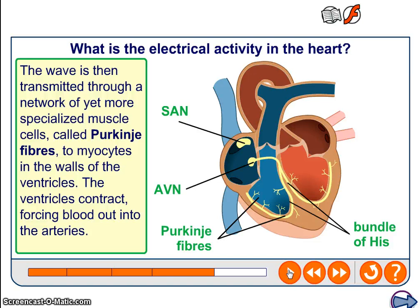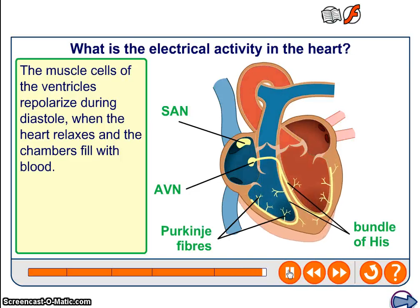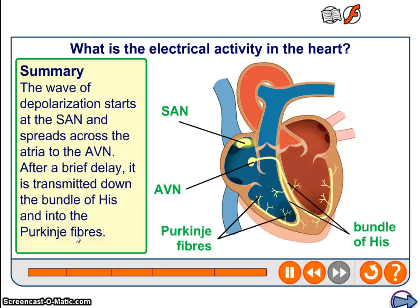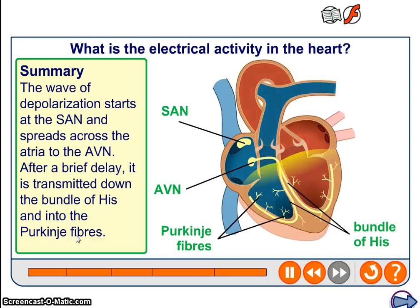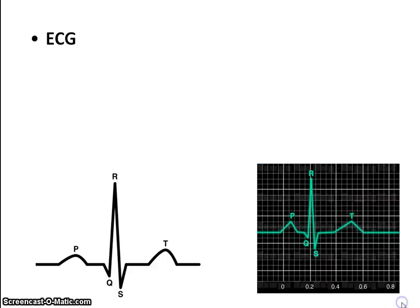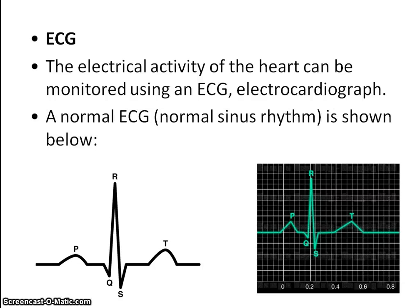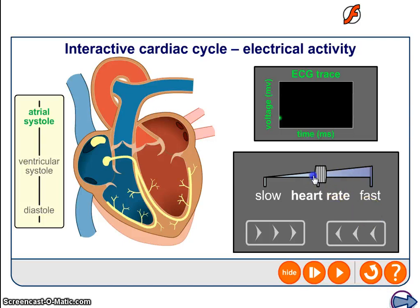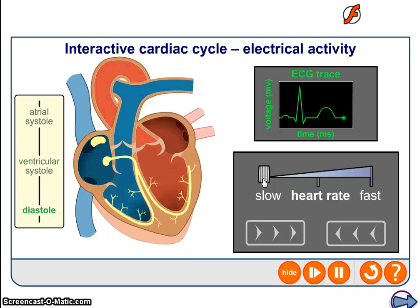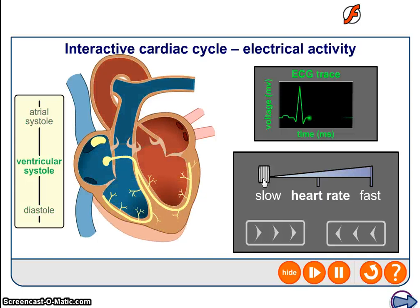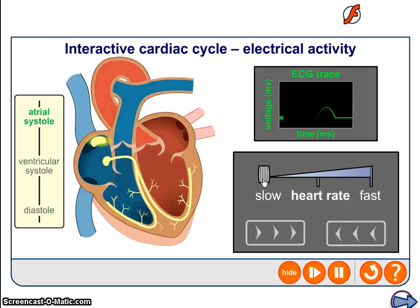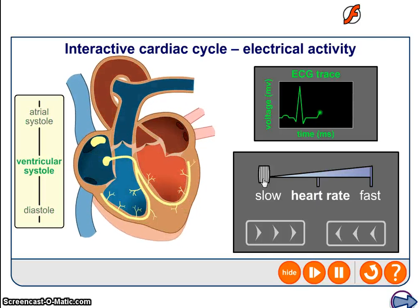Myocytes are simply another word for muscle cells. Looking at the ECG — the electrocardiograph — that's the normal trace, the normal ECG trace. Note the units of the ECG trace: voltage versus time.